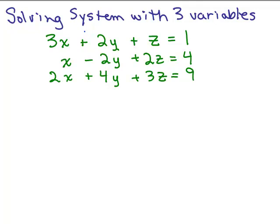We're going to solve this system of three linear equations which have three variables, x, y, and z. What we're looking for is an ordered triple (x, y, z) that works in all three equations to make them true. This is a linear system because there are no squared terms. I'm going to call this equation A, this equation B, and this equation C.